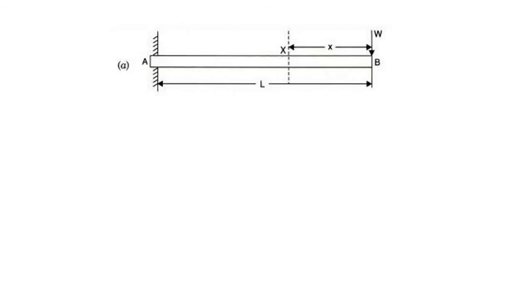So what is actually a cantilever beam? A cantilever beam is a beam which has a fixed end at one end and is free at the other end. You can apply any type of load anywhere within this length.